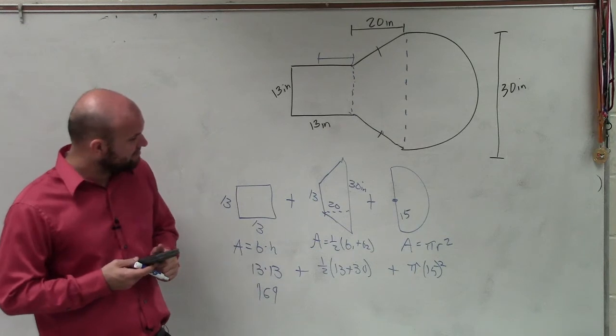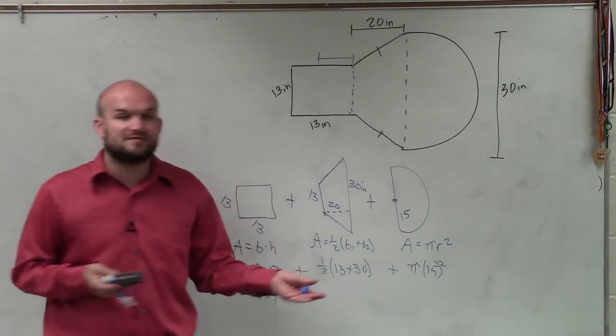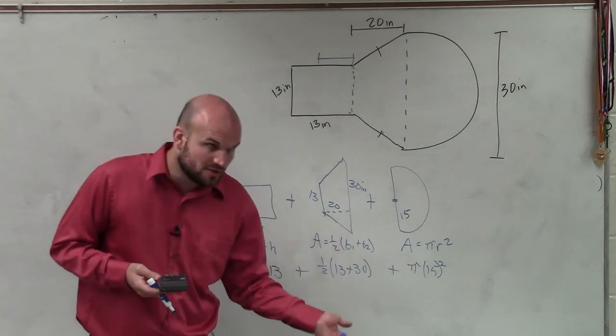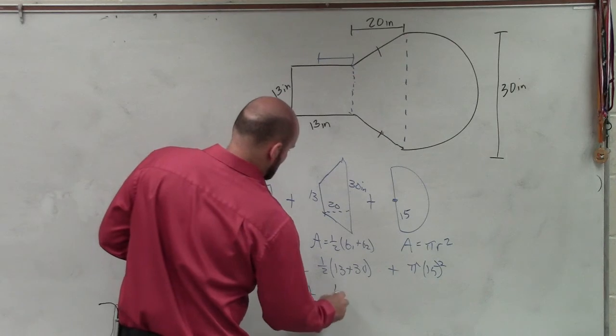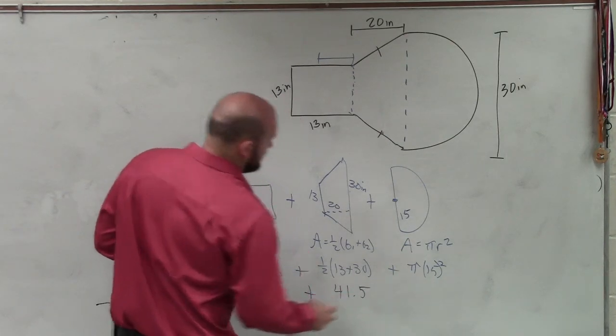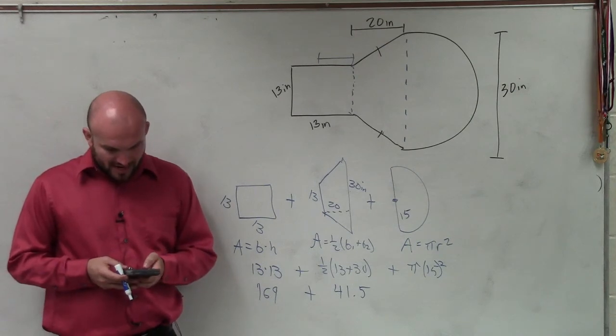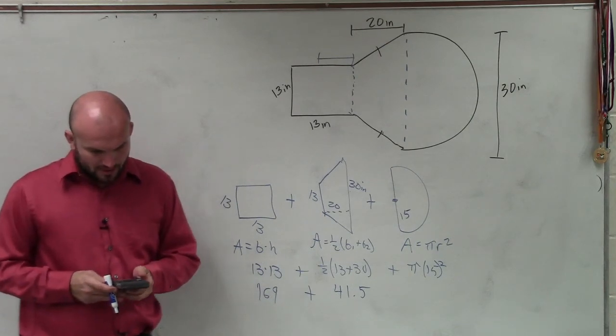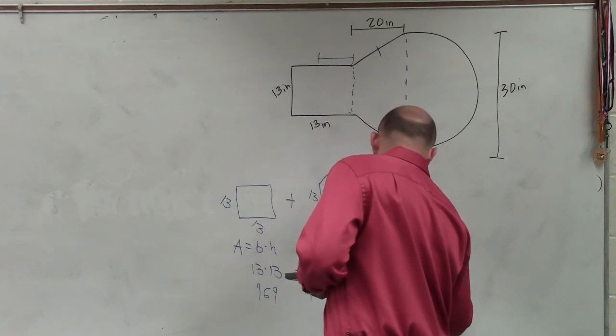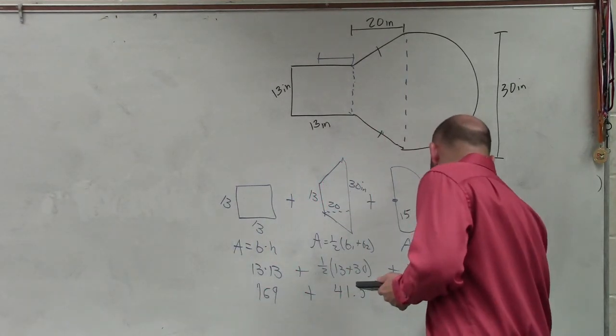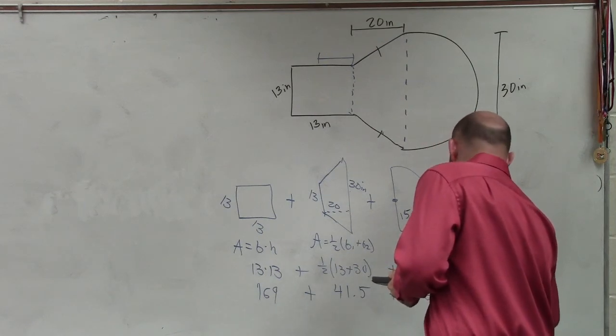13 plus 30 is 43 times one half is the same thing as dividing by 2. So that would be 41.5.